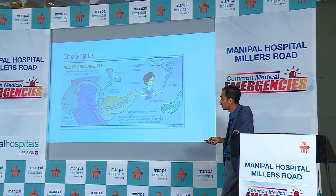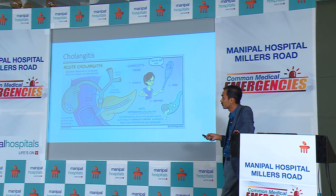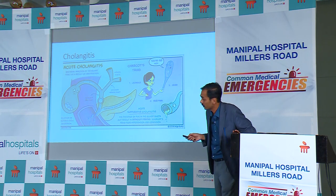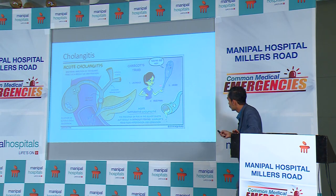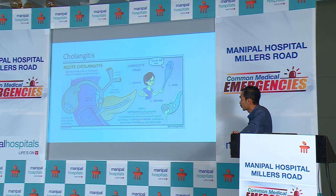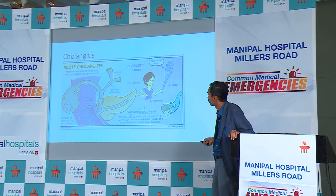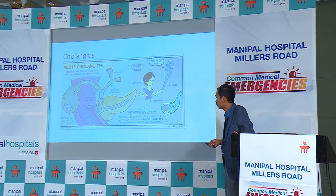Common causes for cholangitis are bile duct stones which slip down and block the biliary tree, causing obstruction and cholangitis. The classic triad of jaundice, fever, and right upper quadrant pain is Charcot's triad. If this is associated with hypotension and confusion, it means it has progressed further - then it's called Reynolds' pentad.